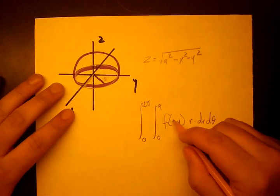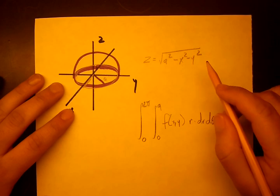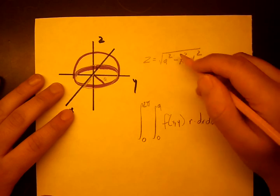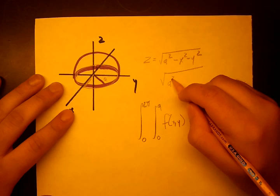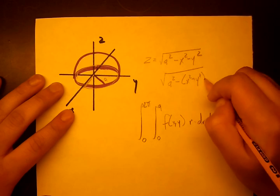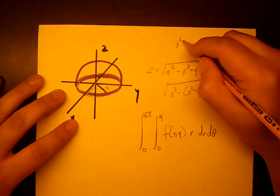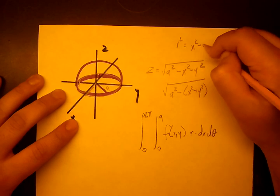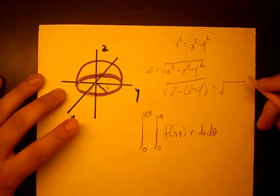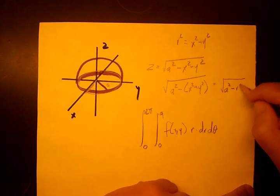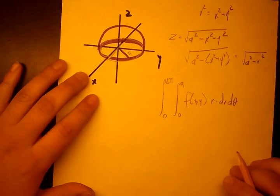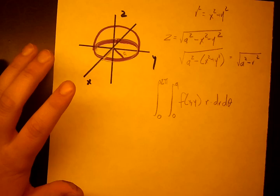Now what we want to do is f of x, y is here, but we want to convert this to something in terms of r and theta. So we know this can be written as a squared minus x squared plus y squared. We know that in polar coordinates, r squared equals x squared plus y squared. So this can be written as a squared minus r squared.